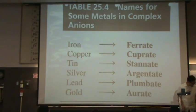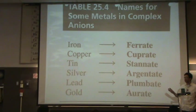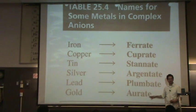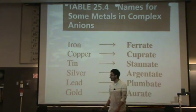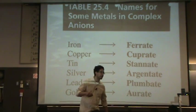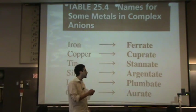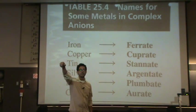You've got to know those names — we're going to use them. They all have special suffixes, which are -ate, and you always use this suffix and this one only. You're going to see these when we name transition metals that have complex ions with negative charges, so you always use these.